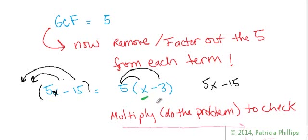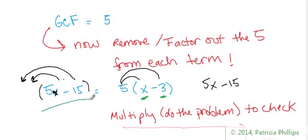You need the second term. The second term was negative, so you write the negative down. The greatest common factor factored out was 5, so what can you multiply times 5 to get negative 15? Well, 5 times negative 2 is negative 10 — that's not right. 5 times negative 3 is negative 15 — so you put negative 3 there. Check: 5 times x equals 5x, and 5 times negative 3 is negative 15. That was your original problem, so you have correctly factored out the greatest common factor.